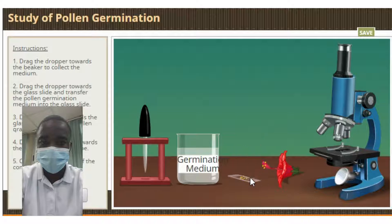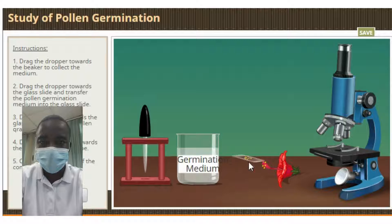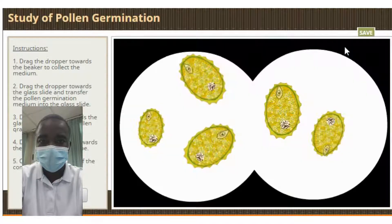Pollination usually happens when an animal brushes against the pollen-covered stamen, picking up the pollen. The animal then brushes against the pistil of another plant, leaving the pollen behind and allowing the plant to reproduce.